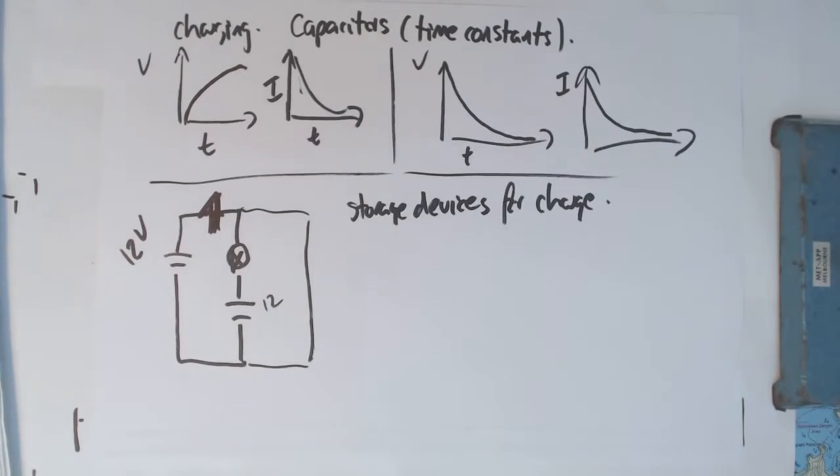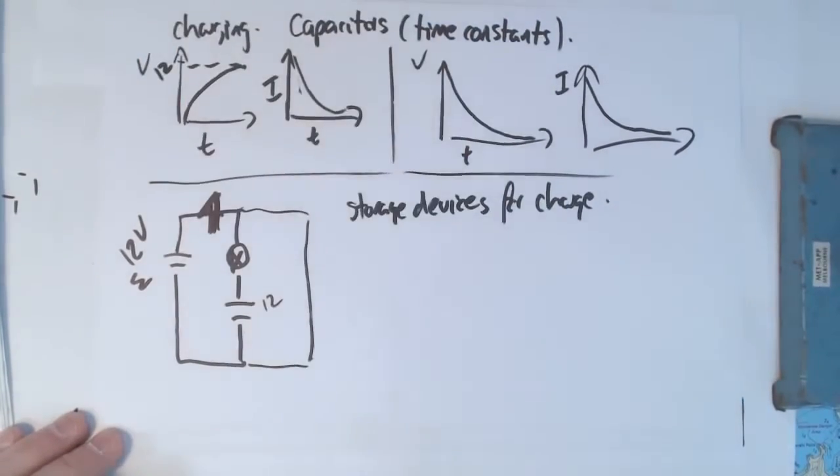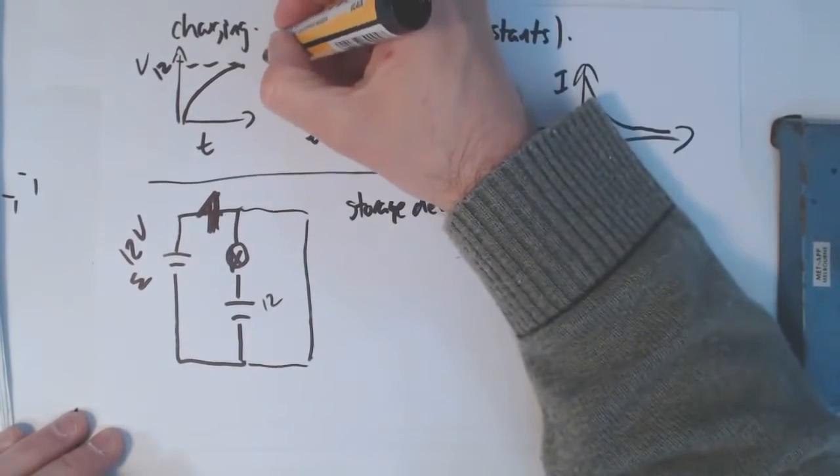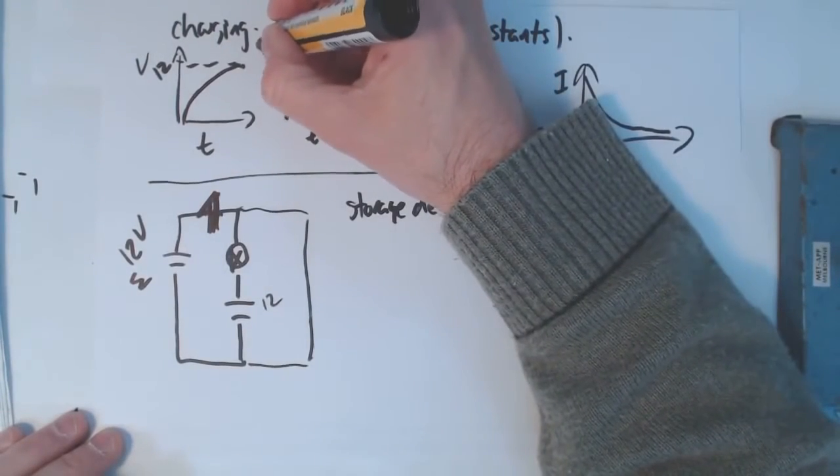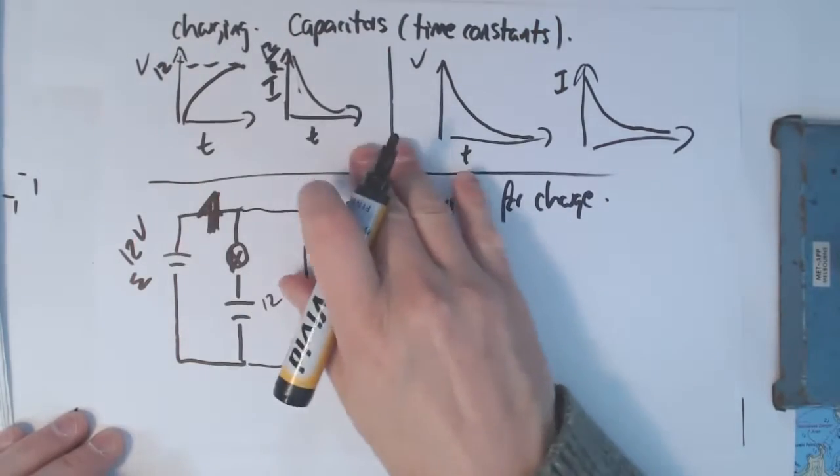Looking at actual numbers, if the EMF is 12 volts, then this little guy will charge up to 12 volts. It will start as if there's no capacitor. So the current will be 12 volts divided by the resistance of that lamp. And it will drop down to zero.